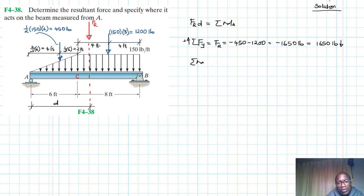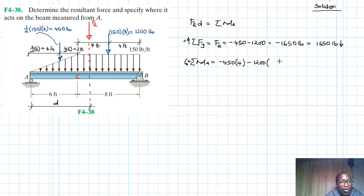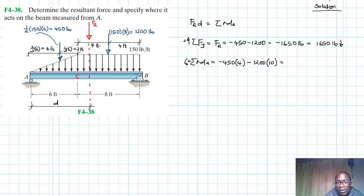Taking the summation of moments about point A, with clockwise as our reference: we have negative 450 times 4, then negative 1200 times 10 (which is 4 plus 6). So 450 by 4 and 1200 by 10 gives us negative 13,800 pound-feet, or 13,800 pound-feet clockwise.